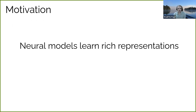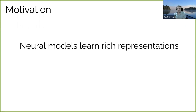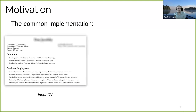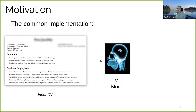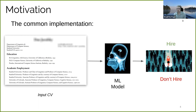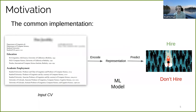So we know that neural models are very good at learning rich representations of text, and these representations are increasingly being used in real-world applications. For example, we may have the CV of some person as input, feed it to a neural model, and get a prediction — such as whether or not we should hire this person for a job. Newer models are good at distilling important features from input text, but the representations they use in classification tasks are kind of a black box — we don't know what is actually encoded in them and they emerge in an unsupervised manner from the training procedure.